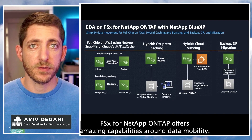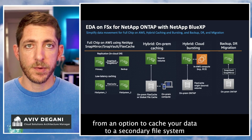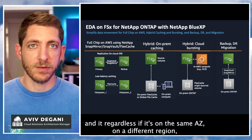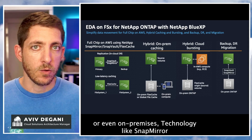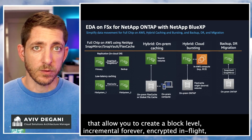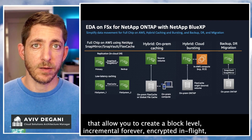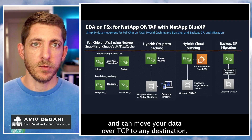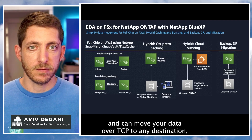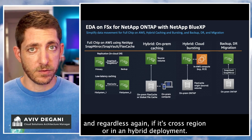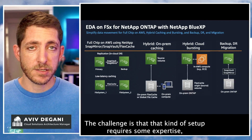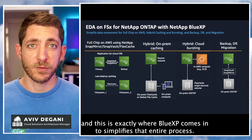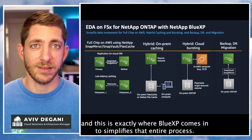FSx for NetApp ONTAP offers amazing capabilities around data mobility — from caching data to a secondary file system, whether it's on the same AZ, a different region, or on-premises. Technologies like SnapMirror allow you to create a block-level incremental-forever, encrypted in-flight replication that preserves all efficiencies and can move data over TCP to any destination, whether cross-region or in hybrid deployments. The challenge is that this kind of setup requires expertise, and this is exactly where BlueXP comes in to simplify the entire process.